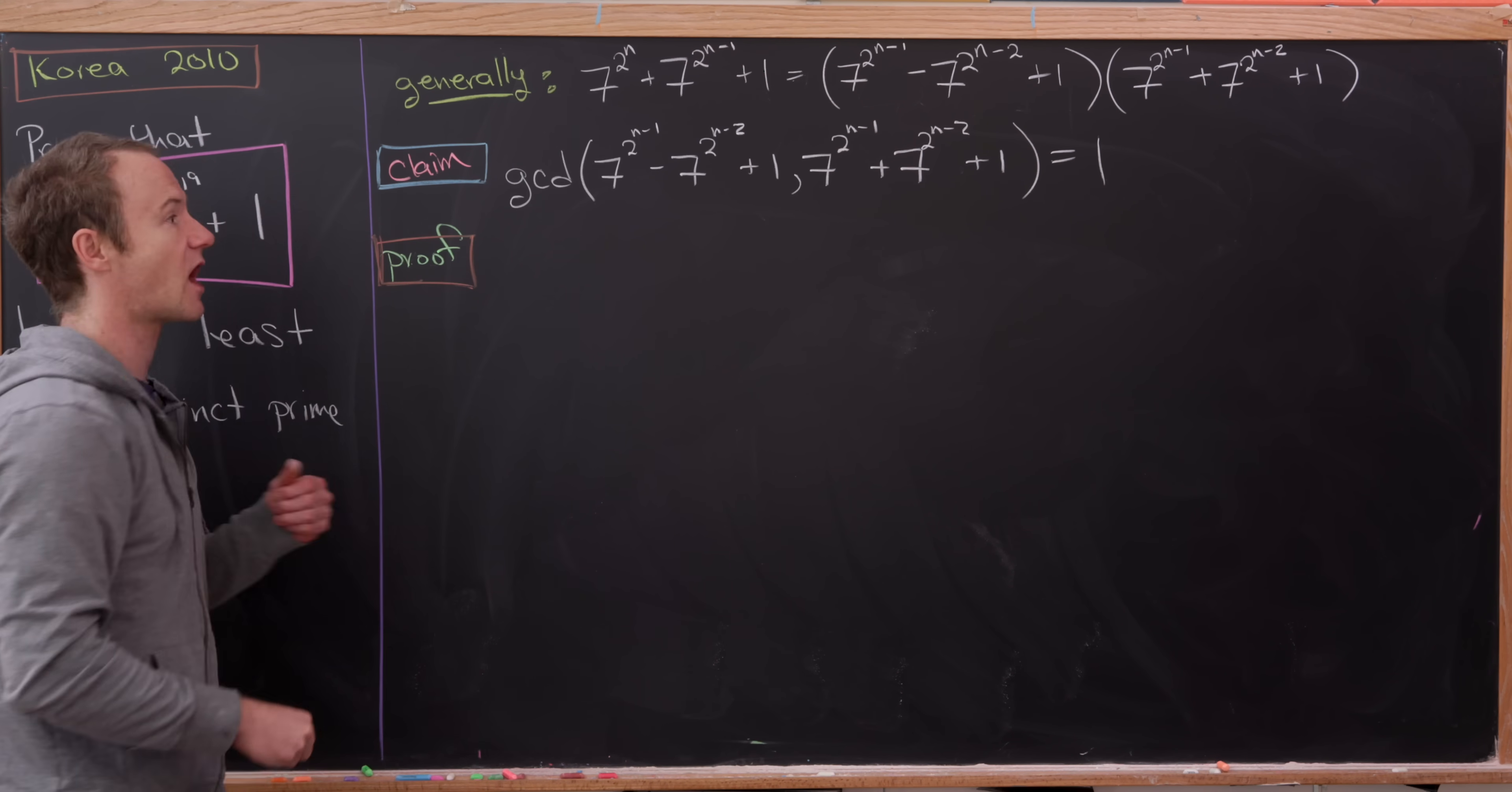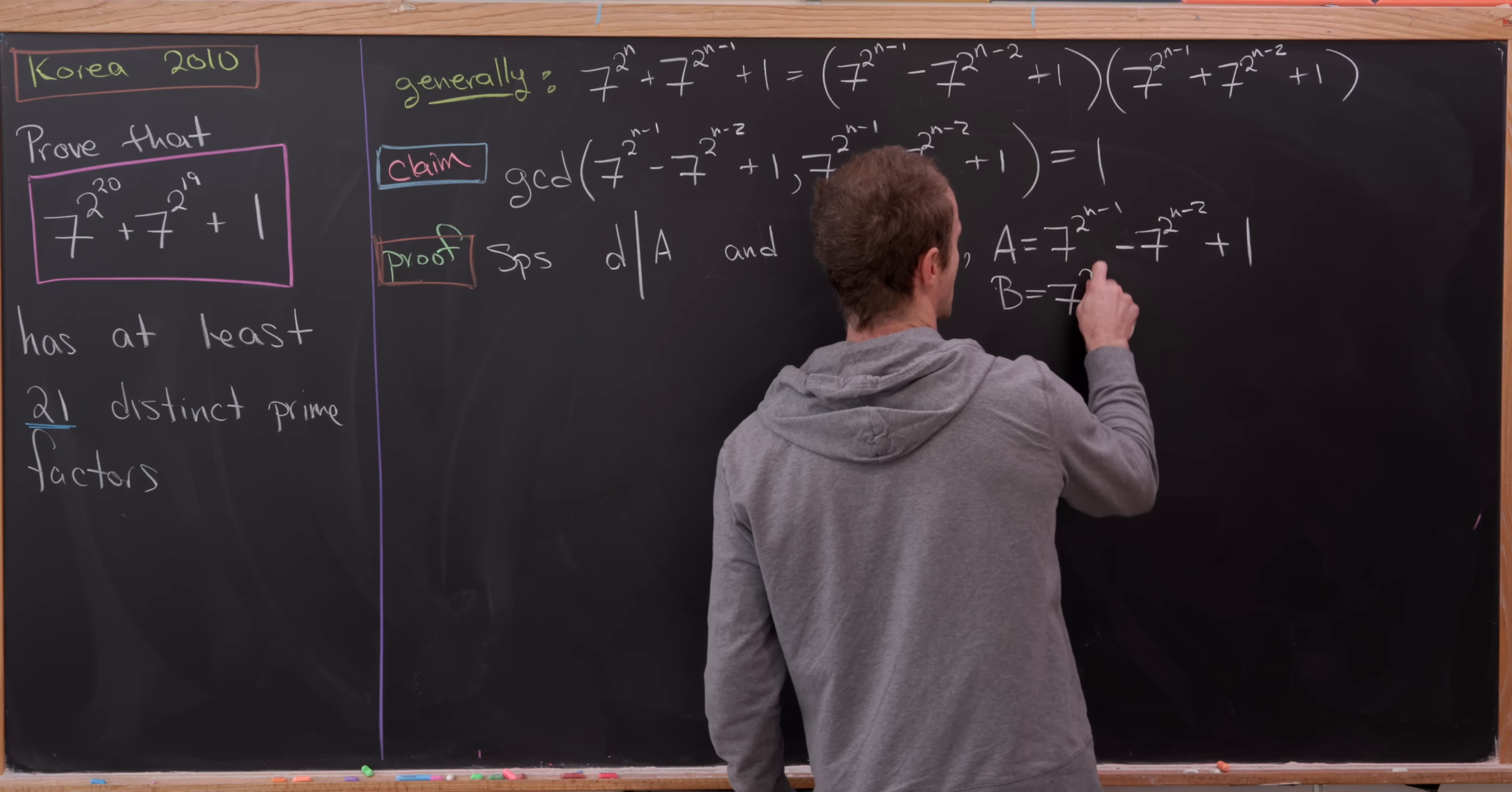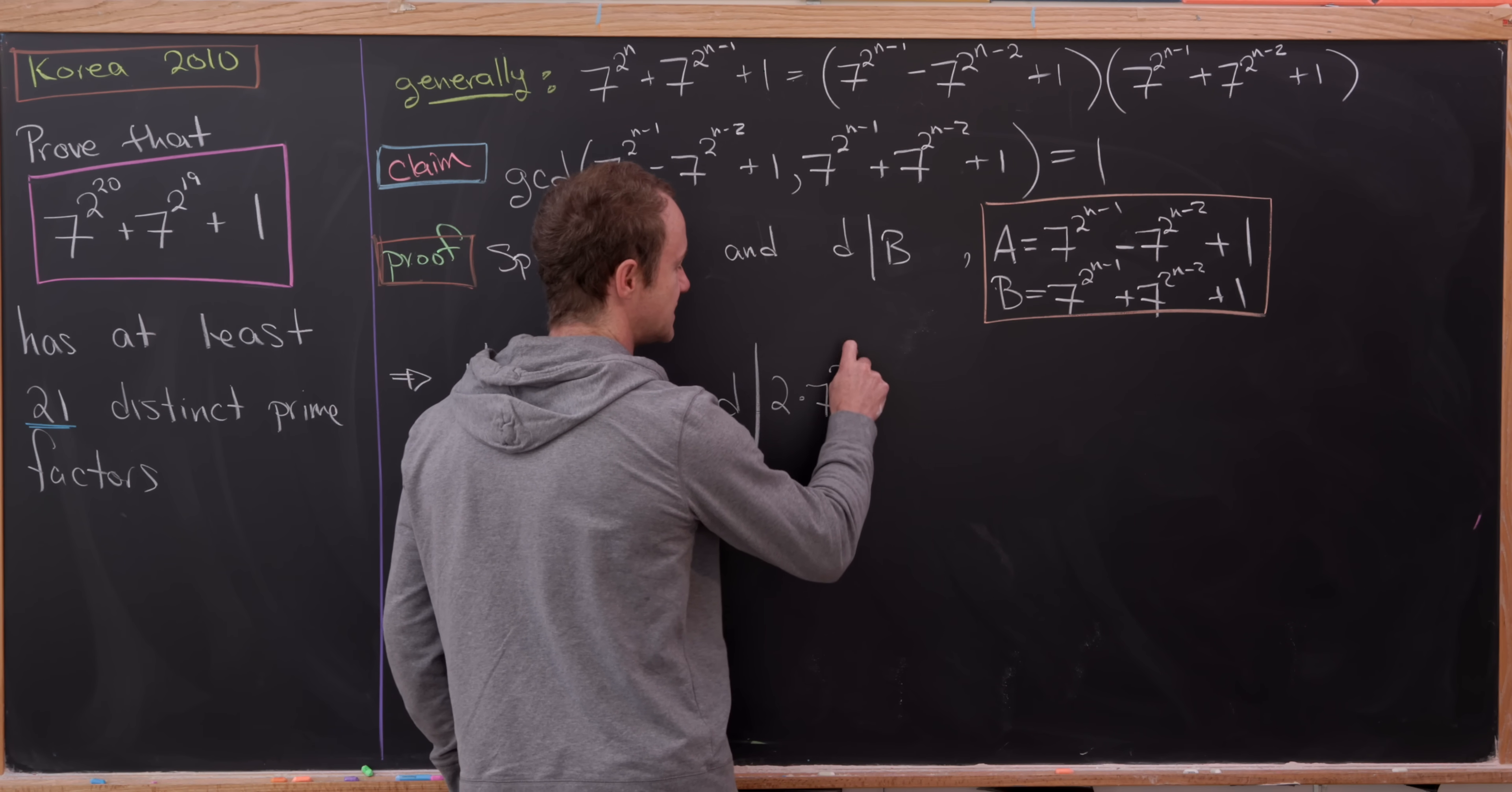And we'll do this by taking a common divisor and showing that that common divisor has to be 1. So let's suppose we have a common divisor. So in other words D divides, I'm going to call these things capital A and capital B. So D divides capital A and D divides capital B. And then just for once and all we'll put capital A over here. 7 to the 2 to the n minus 1 minus 7 to the 2 to the n minus 2 plus 1. And then B has the corresponding format. But now let's observe that if D divides A and D divides B, that tells us that D divides their difference, B minus A. But that means that D divides, well let's calculate their difference. Well if we take the difference of B and A, notice that the top powers of 7 will cancel. And the number 1 will cancel also, giving us 2 times 7 to the 2 to the n minus 2.